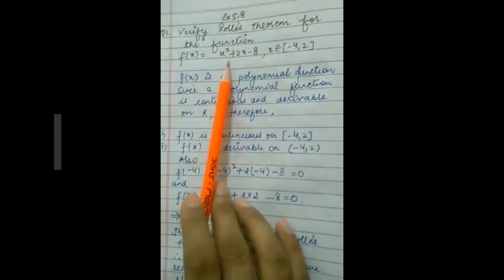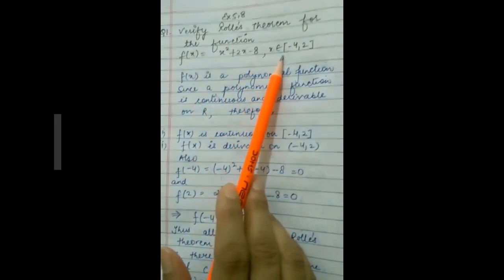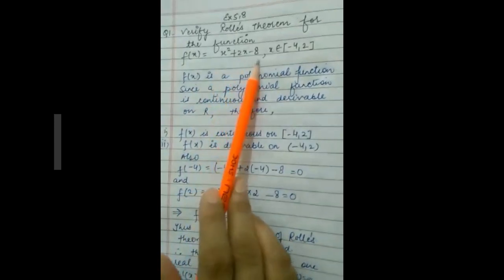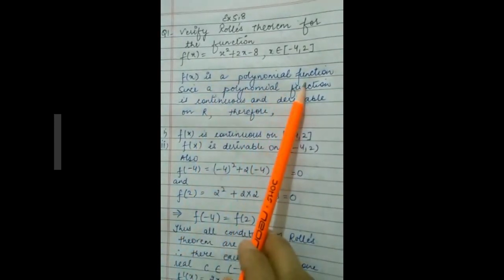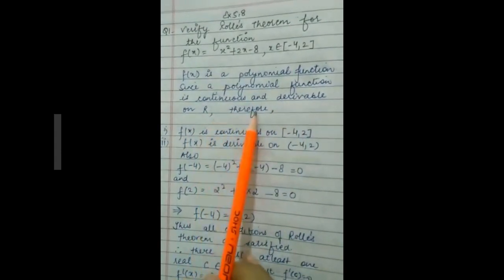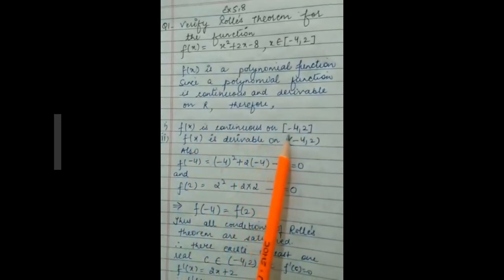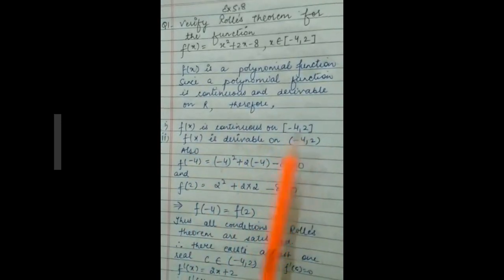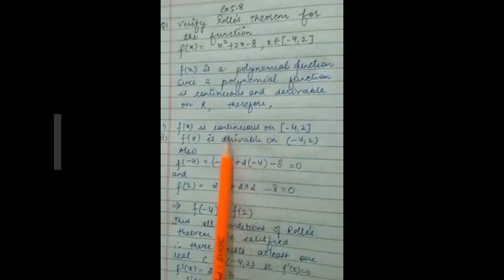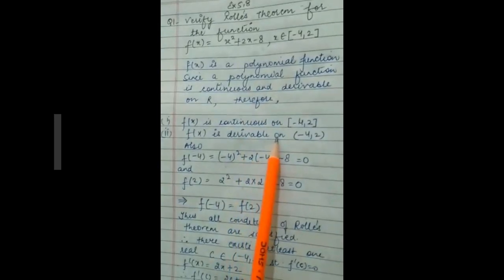We will do Exercise 5.8, Question 1: verify Rolle's Theorem for f(x) = x² + 2x − 8 where x belongs to the closed interval [−4, 2]. Since f(x) is a polynomial function, and polynomial functions are continuous and derivable over ℝ, therefore f(x) is continuous on [−4, 2] and derivable on (−4, 2). We need not separately prove continuity and derivability.